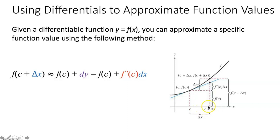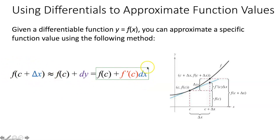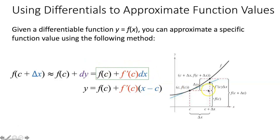Without a calculator, we can't evaluate f at c + delta x. So we approximate it using the tangent line. This formula — f(c) + f′(c)dx — is actually the exact same thing as our tangent line approximation formula from earlier. The only difference is that instead of (x − c), the change in x, we're using the differential dx, which means the same thing.